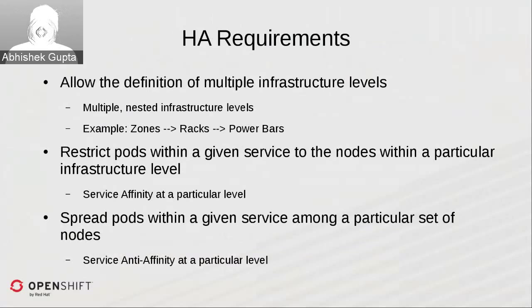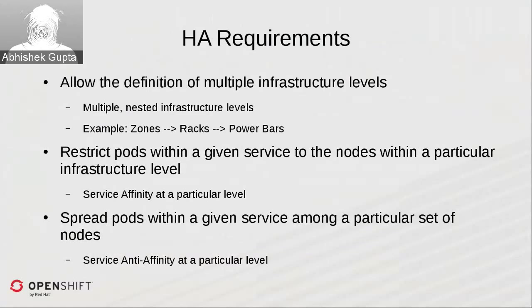Spreading pods within a given service among a particular set of nodes is the crux of anti-affinity and achieving a good spread. For example, you might want all service pods within a zone to be spread across all available racks. This is the priority function you'd use, and you can specify good spread at multiple levels.